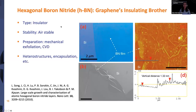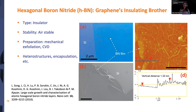Hexagonal boron nitride (hBN) is often referred to as graphene's insulating brother. It has a very similar structure to graphene but made with boron nitride, is an insulator, and is air stable. It's used for heterostructures and encapsulation — for example, placing hBN on top of black phosphorus to preserve its stability when taken out of the glove box.